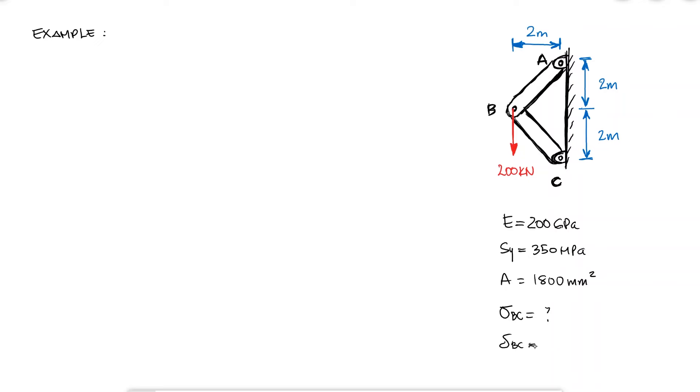Let's take a look at a simple example of a structure that is subjected to a 200 kN load. I know the distances between points A, B, and C, and I know that members AB and BC are both made of a material with an elastic modulus of 200 gigapascals, a yield strength of 350 megapascals, and a cross-section area of 1800 millimeters squared. I would like to know the stress and the displacement in member BC.